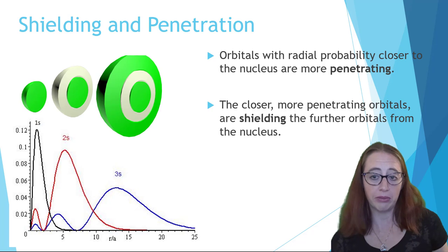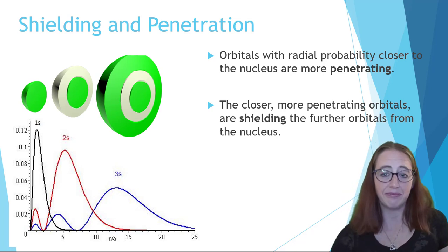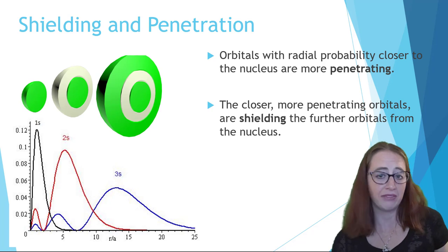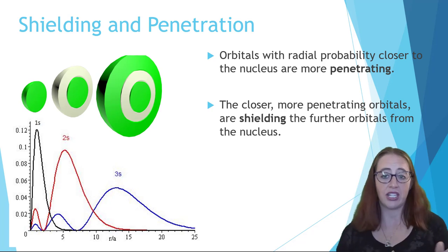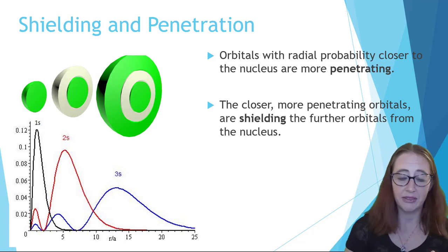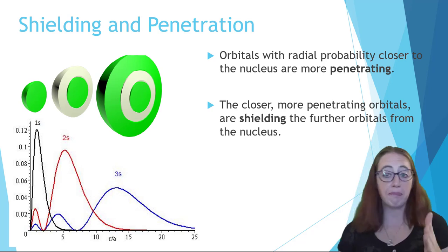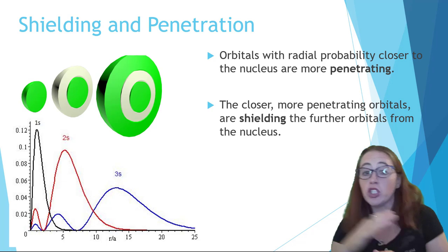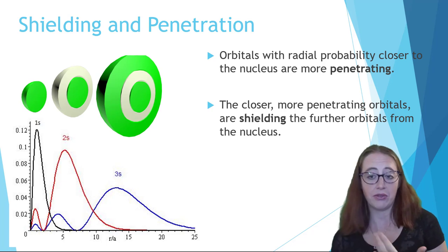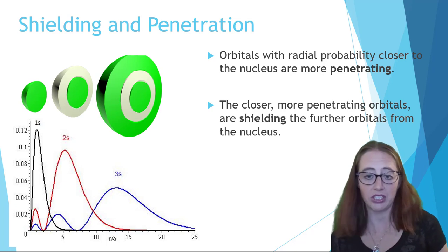Each time you are putting something between you and the thing that you are protecting yourself from. Shielding, when we discuss orbitals, is the same basic idea. Because the nucleus is positively charged, the electrons are attracted to the nucleus. However, the more penetrating orbitals, or the orbitals which are closer to the nucleus, will shield the outside orbitals, since those inside orbitals are also negatively charged.